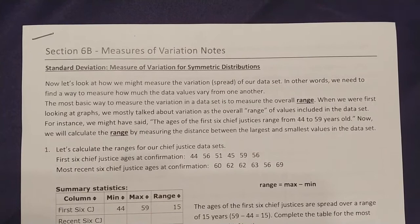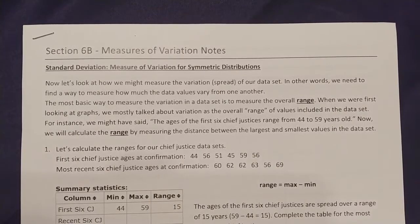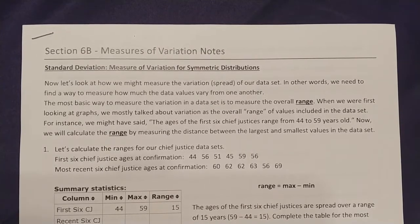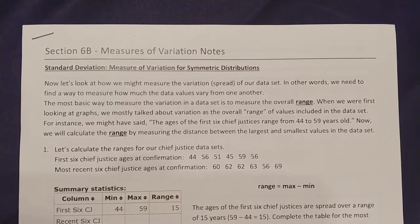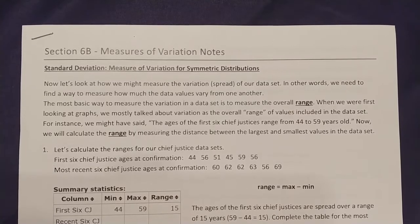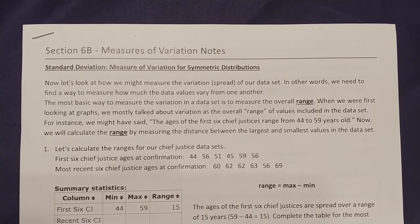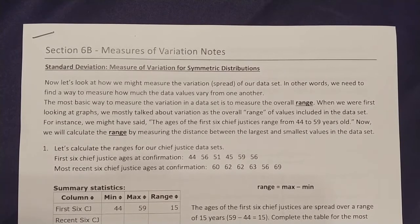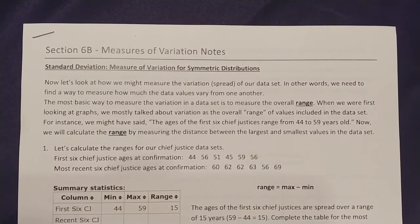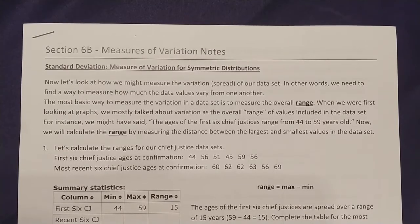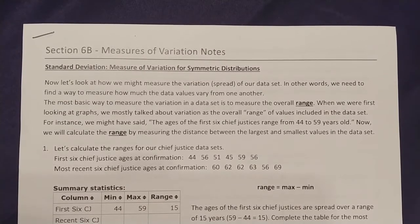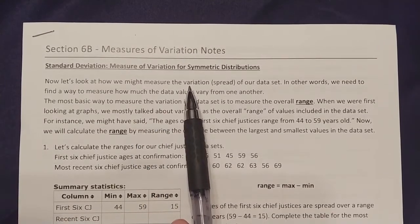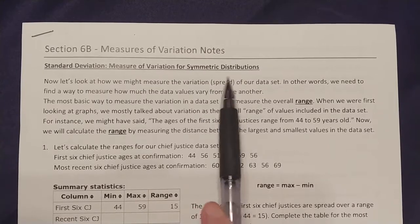In section 6b, we talk about measures of variation — the spread of our data — and what we call standard deviation. Standard deviation measures variation for symmetric distributions. Remember from section 6a, most data falls into two categories: symmetric distributions and skewed distributions. Skewed distributions can be either right or left skewed. Now we look at how to measure variation, which is another word for spread, of our data set.